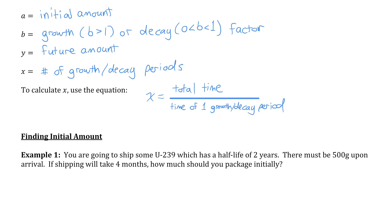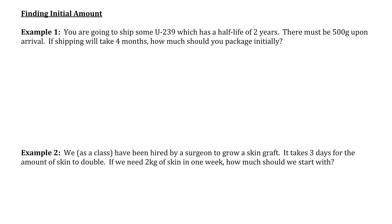Let's start this lesson by doing some questions where we have to solve for the initial amount, the 'a' value, of the exponential relationship. Example one: you're going to ship some U-239 — uranium — which has a half-life of two years. That means it repeatedly gets cut in half every two years.